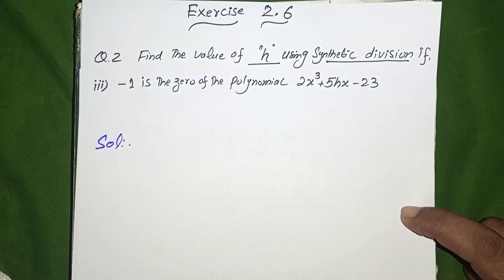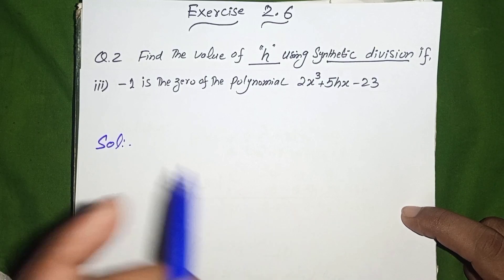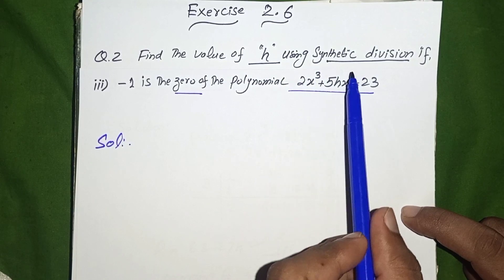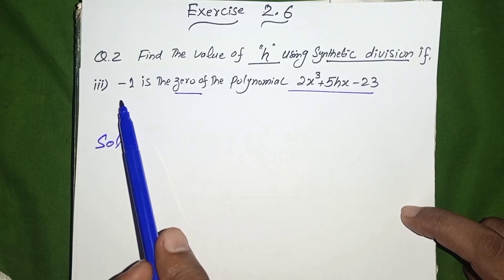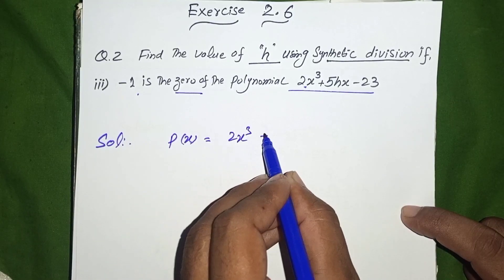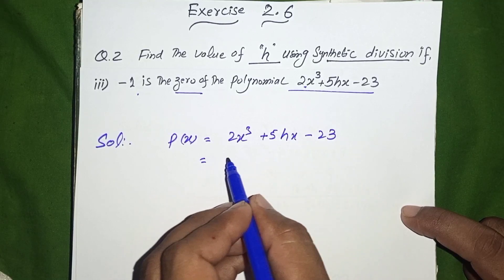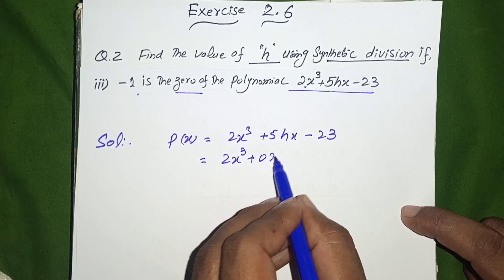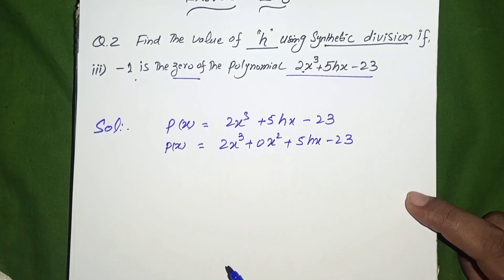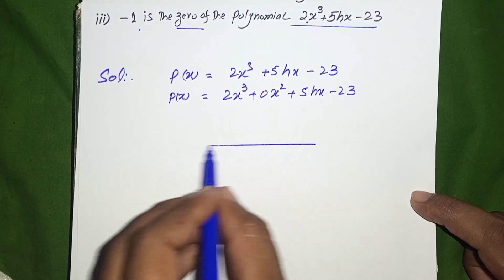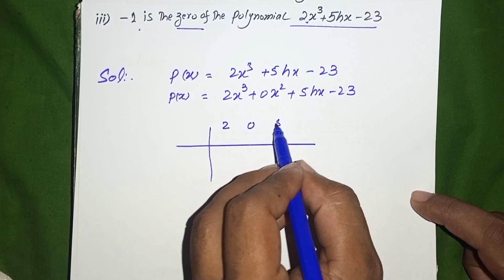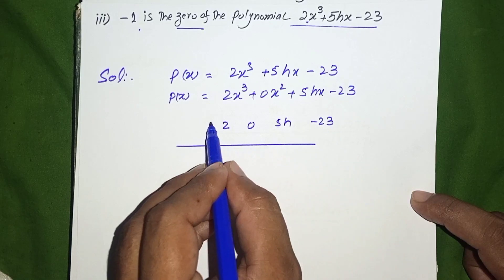Exercise 2.6, question 2, part 3: Find the value of H by using synthetic division if -1 is the zero of the polynomial 2x³ + 5Hx - 23. We arrange it in descending order: 2x³ + 0x² + 5Hx - 23. The coefficients are: x³ → 2, x² → 0, x → 5H, constant → -23. We divide by -1.